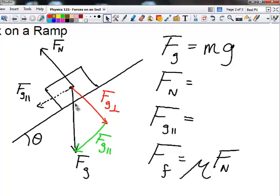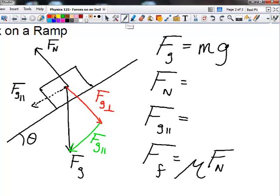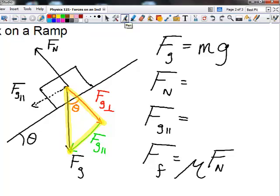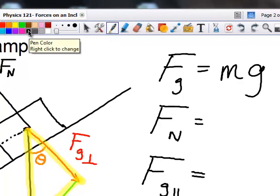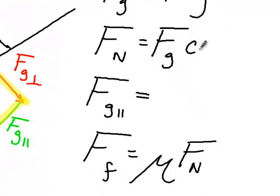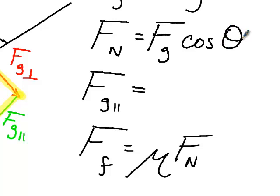If we go through and prove the triangles, we find that this angle right here is also theta — where FG is the hypotenuse of the triangle, FG perpendicular is the adjacent side, and FG parallel is the opposite side from angle theta. We know that when solving for the adjacent side we use cosine, so the normal force — which is equal and opposite to FG perpendicular — equals FG times the cosine of theta. That relationship only applies to objects on an incline.